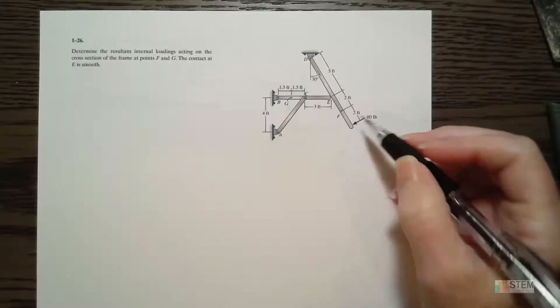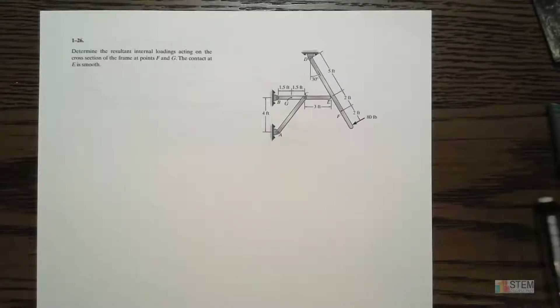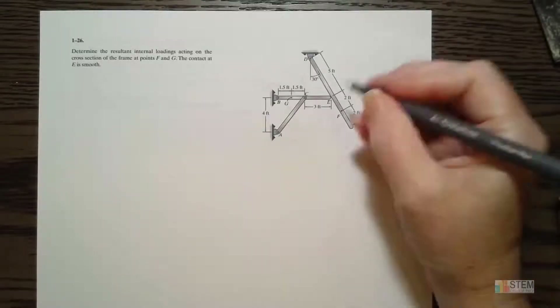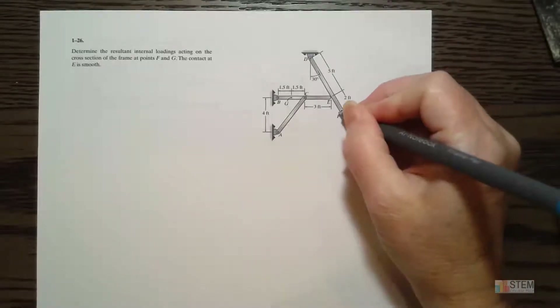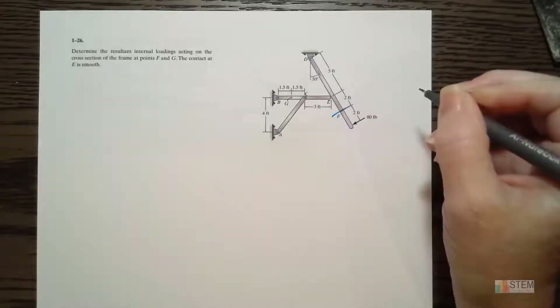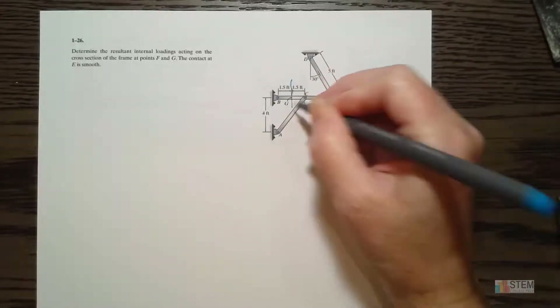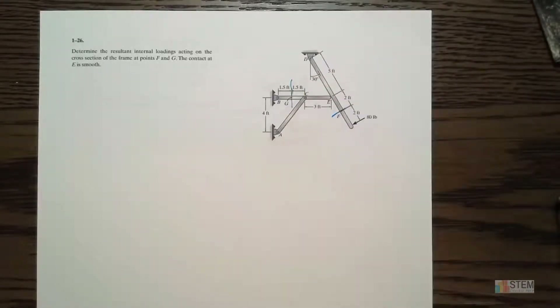What we have to do when we want to find internal loadings is we've got to make a section cut at the point we're looking at. So I need to section this here, and then we'll need a section here.